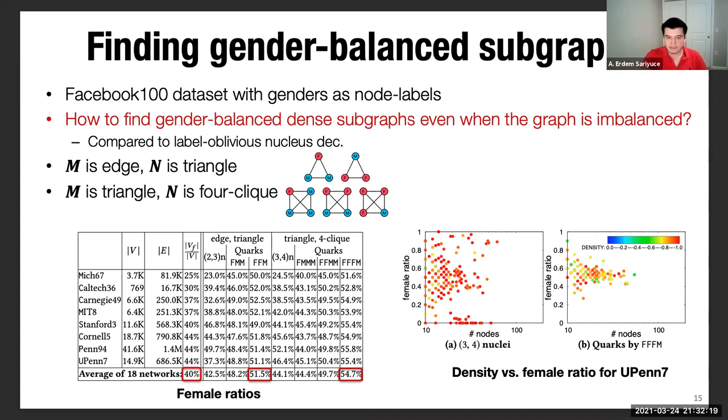Here I'm just showing different variations with female and male nodes. The interesting thing is, for the networks with like 25% female, we were able to obtain subgraphs where the average female ratio is around 50% or 51.6% with this triangle four-clique variant. On average, like 40% was the average female ratio, but we were able to find subgraphs that has 54.7% female, thanks to our quark decomposition with this triangle and four-clique methods.